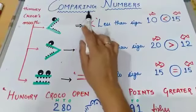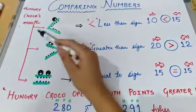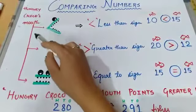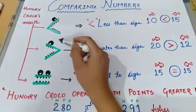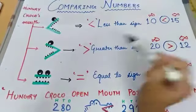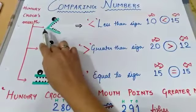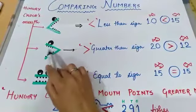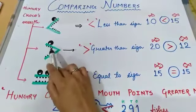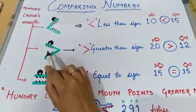Students, today we will learn comparing numbers. See here, this is the hungry croco's mouth - croco the crocodile. He is very hungry, he wants to eat the fishes. So this is his mouth, this is the closed side and this is the open side. Closed, open.